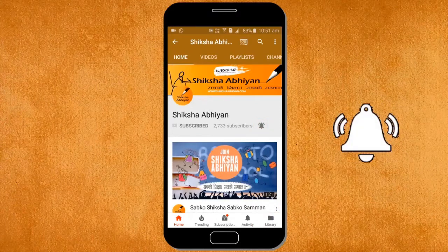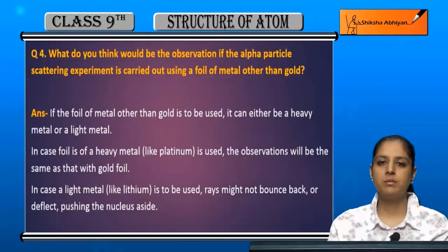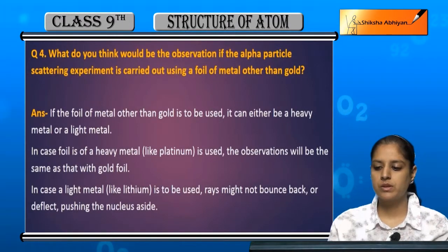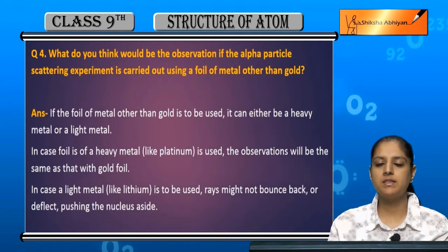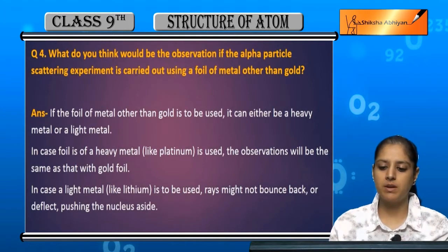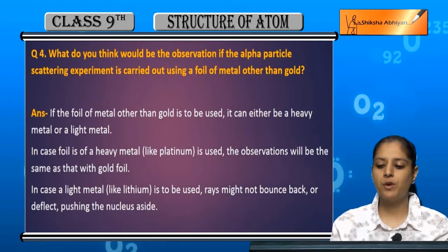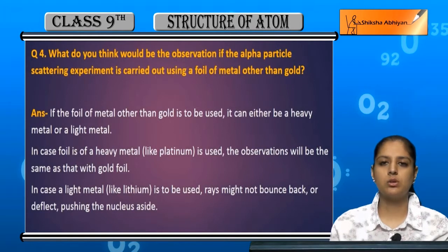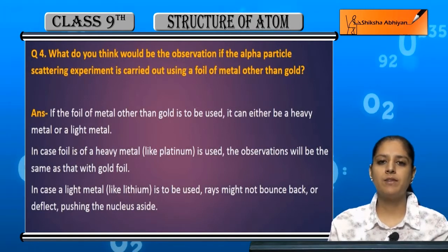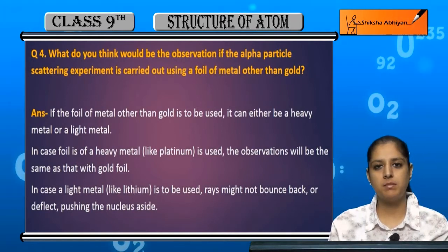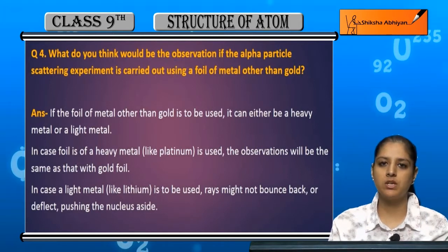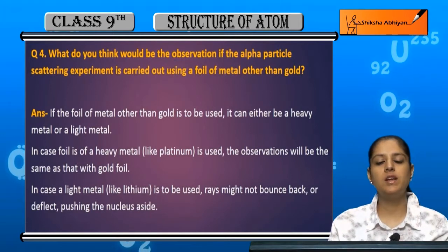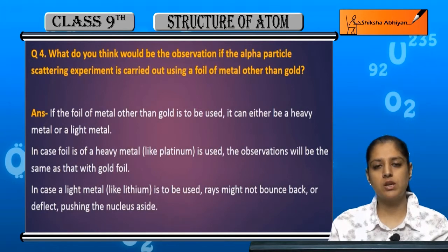Question number four: what do you think would be the observation of the alpha particle scattering experiment if it is carried out using a foil of metal other than gold? In Rutherford's alpha particle scattering experiment, a thin gold foil is used. So if we don't use gold foil and use any other metal, what will be the observation?